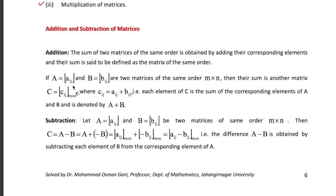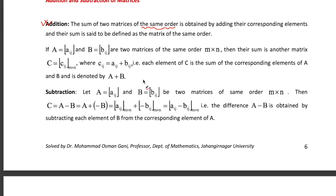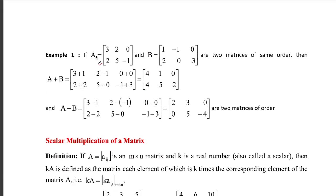Let us see how we can add two matrices. Suppose you are given two matrices A and B. The condition for matrix addition is that you can add two matrices only when they are of the same order. For subtraction, the condition is the same — they need to be of the same order.